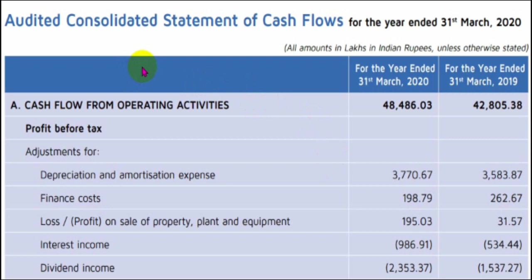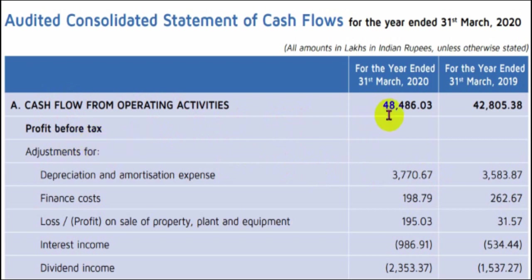We'll begin with the consolidated cash flow statement and understand its components. All values are in lakhs of Indian rupees, so I'll convert them into crores. Let's begin by looking at the cash flow from operating activities. The profit declared before tax was 484 crores in March 2020 and 428 crores in 2019. This is our starting point.